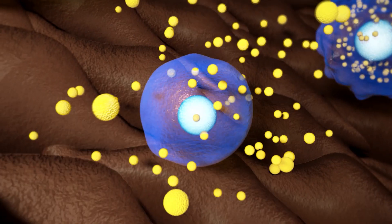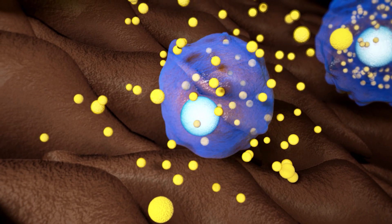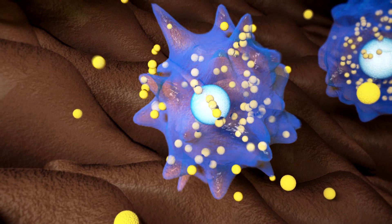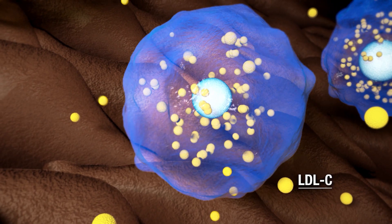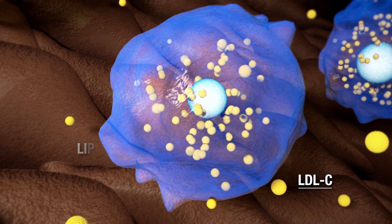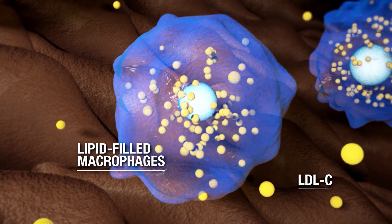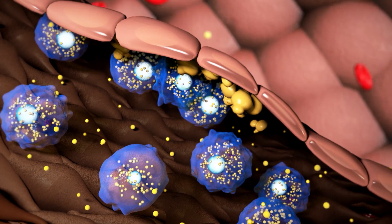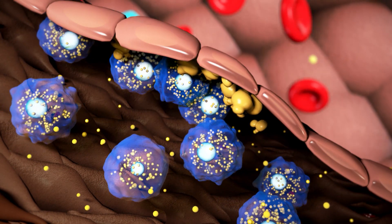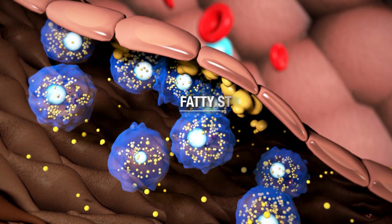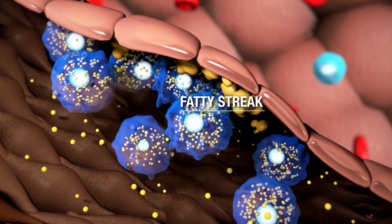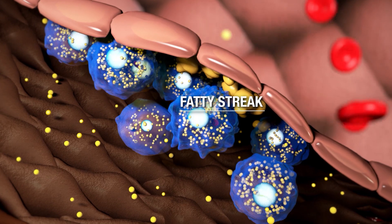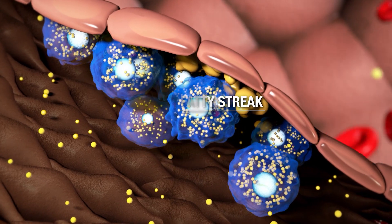As monocytes enter the arterial wall, they engulf LDL-C particles and become lipid-filled macrophages known as foam cells, which aggregate as fatty streaks — the hallmark of early atherosclerosis and plaque development.